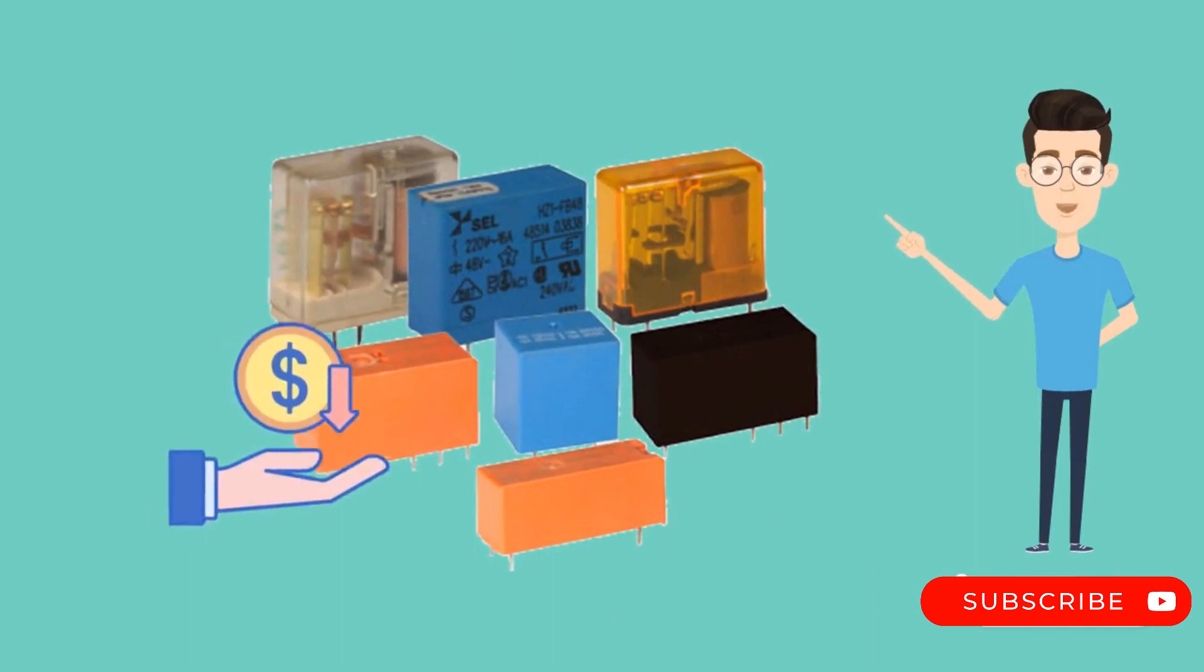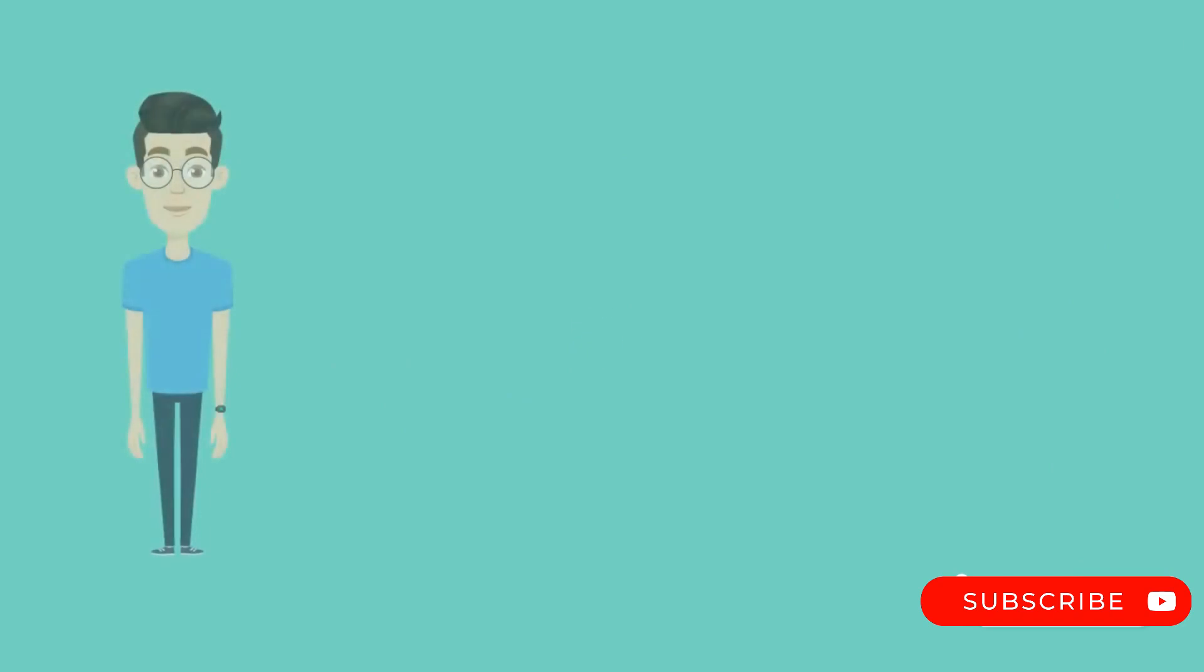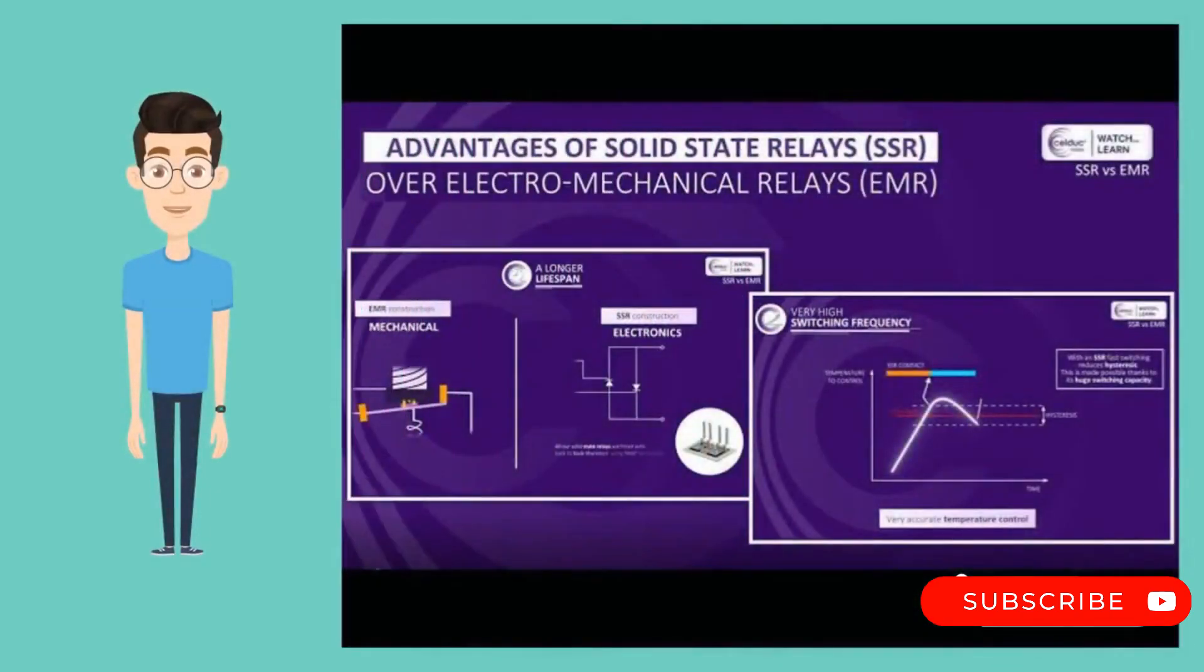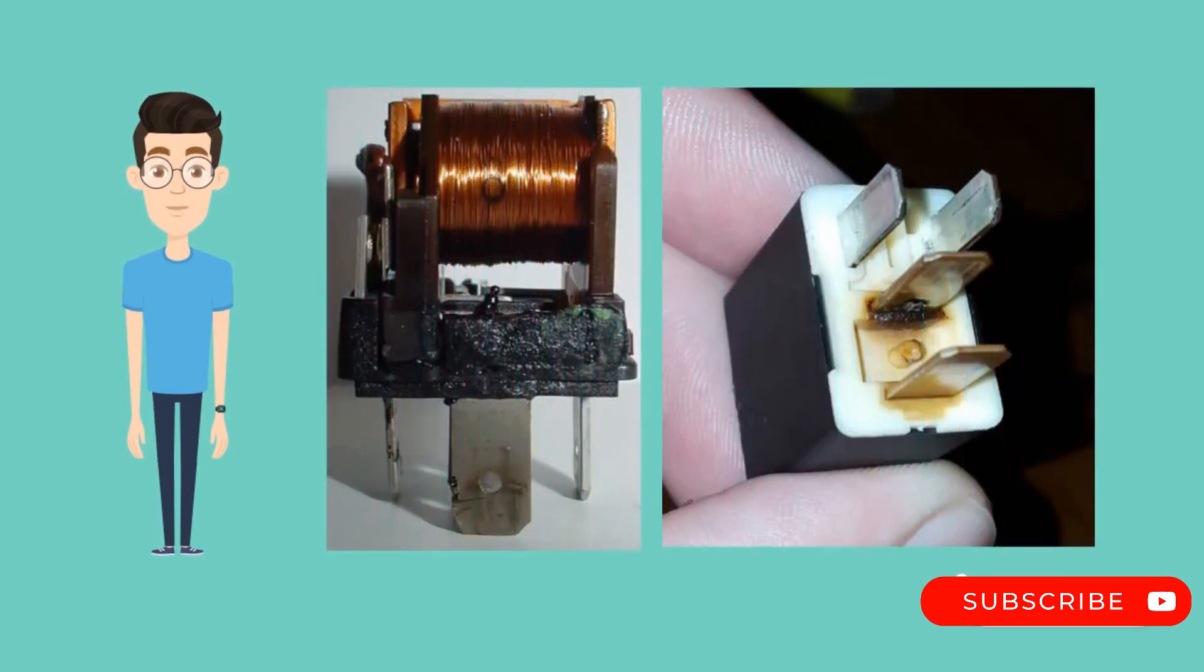These relays are typically less expensive than SSRs, thus making them a popular choice for many applications. One key difference between the two is their lifespan. Magnetic coil relays have moving parts, which means they are more prone to wear and tear over time.